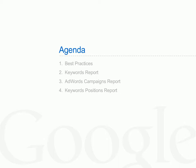Let's take a look at our agenda for today. Firstly we'll look at some best practices to follow when reading the reports in our analytics accounts. Then I'll take you through three AdWords reports which are available in the account: the Keywords report, the AdWords campaigns report, and finally the Keywords Position report.